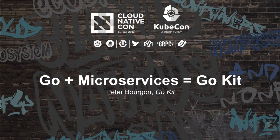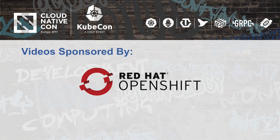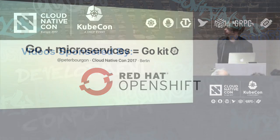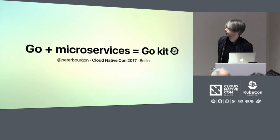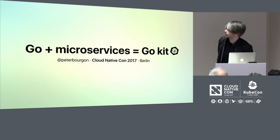It's 1355, and that means in room A04 we're going to talk about Go. This talk is called 'Go plus microservices equals GoKit,' and there's a little gopher in a hex nut — that's the logo.